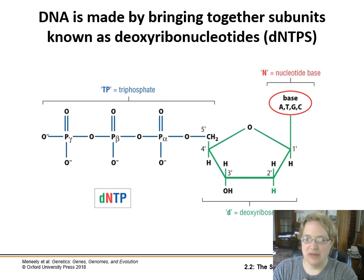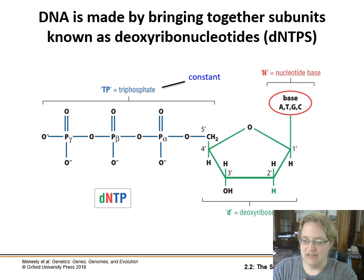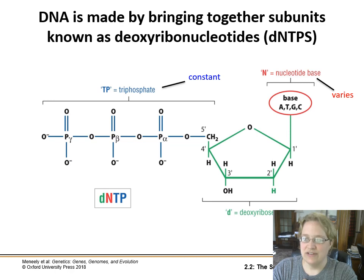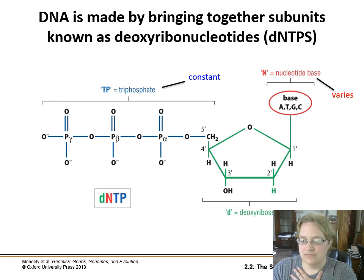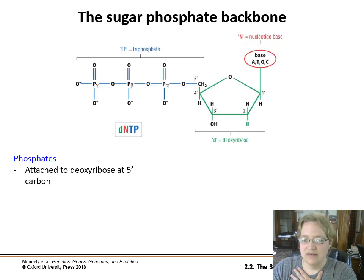This brings us to: what is DNA? DNA is a long polymer made up of subunits called deoxyribonucleotides, shortened as dNTPs. The triphosphate group — the 'TP' part — is the same in all nucleotides, and the sugar is the same as well when you're talking about DNA.